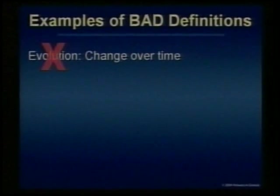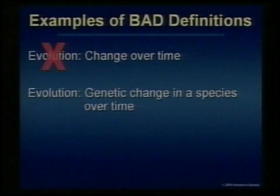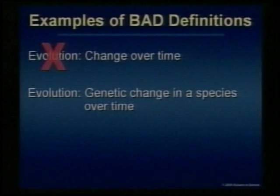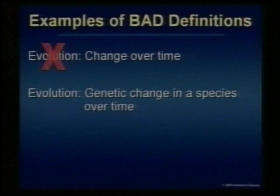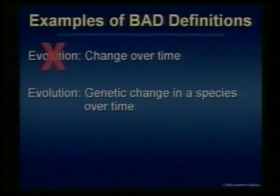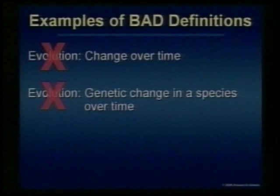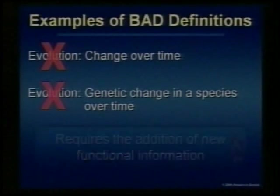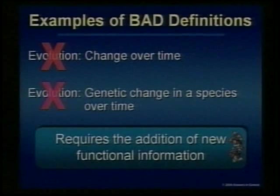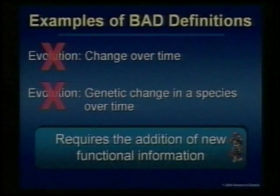Here's another bad definition: evolution is genetic change in a species over time. I thought that was a good one, but no — genetic change can be any kind of genetic change, and most genetic changes go the wrong way. Many genetic changes cause a loss of information. So that doesn't describe evolution either. Neither one of those are valid definitions for evolution. That's why our students are so confused — they're being deceived into believing evolution. You see, evolution requires the addition of new functional genetic information, and that is being left out of our textbooks.